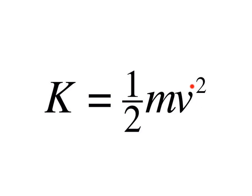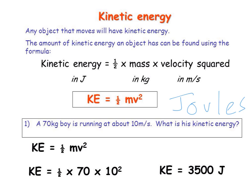And so we can see on this slide we've got our formula and then we have an example down here. So if we have a 70 kilogram boy running about 10 meters per second, we can find his kinetic energy by using our formula. And so we would take one-half times 70, which is the boy's mass, times 10 squared, which is the velocity squared, and when we get that answer we